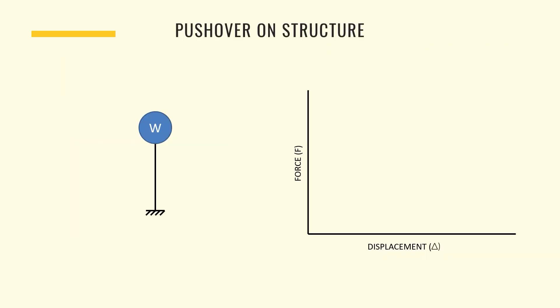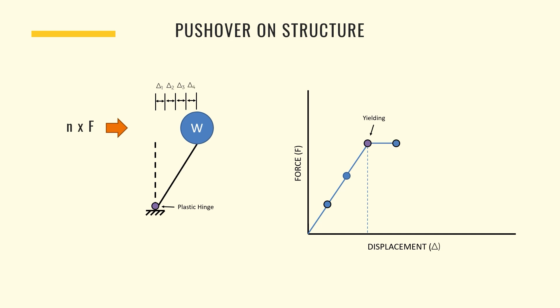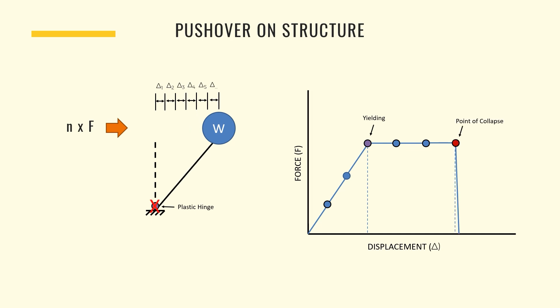To better describe pushover on a structure, consider the previous simple SDOF model and the force versus displacement plot. We apply a lateral force F with a factor of 1, which causes displacement on our structure. Incrementally increasing our force will yield additional reversible displacement until we reach the point of first yield, where the plastic hinges form. From here on, the structure is free to displace without any additional increase in force until the point of collapse is achieved. Pushover analysis allows us to go back to any of the analyzed states to observe forces, displacements, and reactions specific to that step.